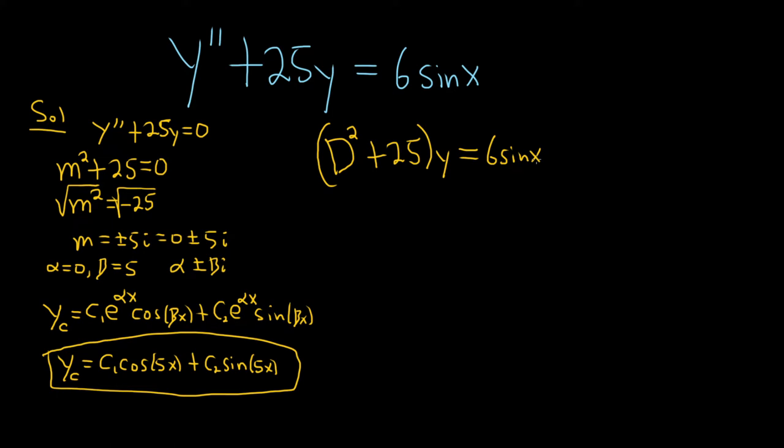Now we need to think about what operator we can use to annihilate the right-hand side. Recall that in order to annihilate sine(beta x) or cosine(beta x) you can use D² + beta². In our example beta is 1 because there's a 1 in front of the x, so we can use D² + 1.